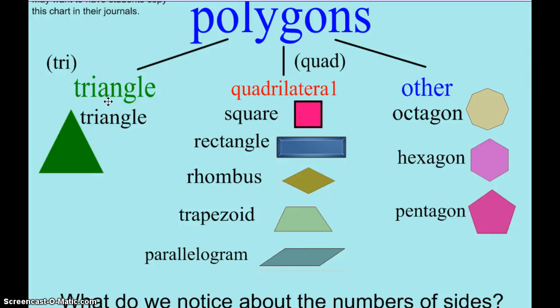Then within the polygon we have several sections. A triangle, tri means 3, it has 3 sides. A quadrilateral, quad means 4 and it always has 4 sides. And then we have others like octagons, hexagons, pentagons.